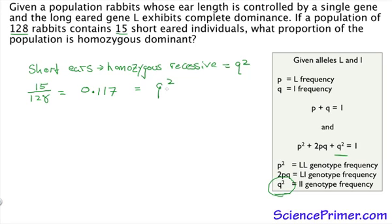So now we know what we have. The question then becomes, what are we looking for? And in this case, we want the homozygous dominant. Homozygous dominant equals p squared. So now we know what we have and what we want, and we can come up with a plan.